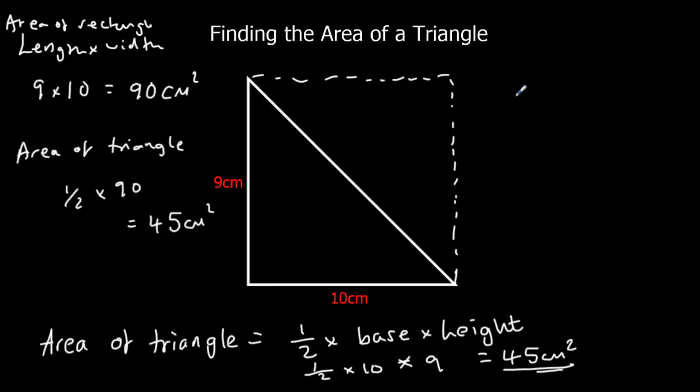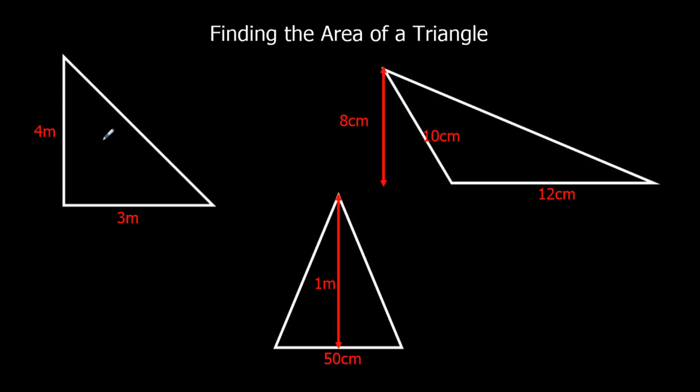So when we're working out the area of the triangle, we're going to do half times base times height. Okay, so let's look at the first one here. We've got the base is 3 and the height is 4. So we're going to use the formula half times base times height.